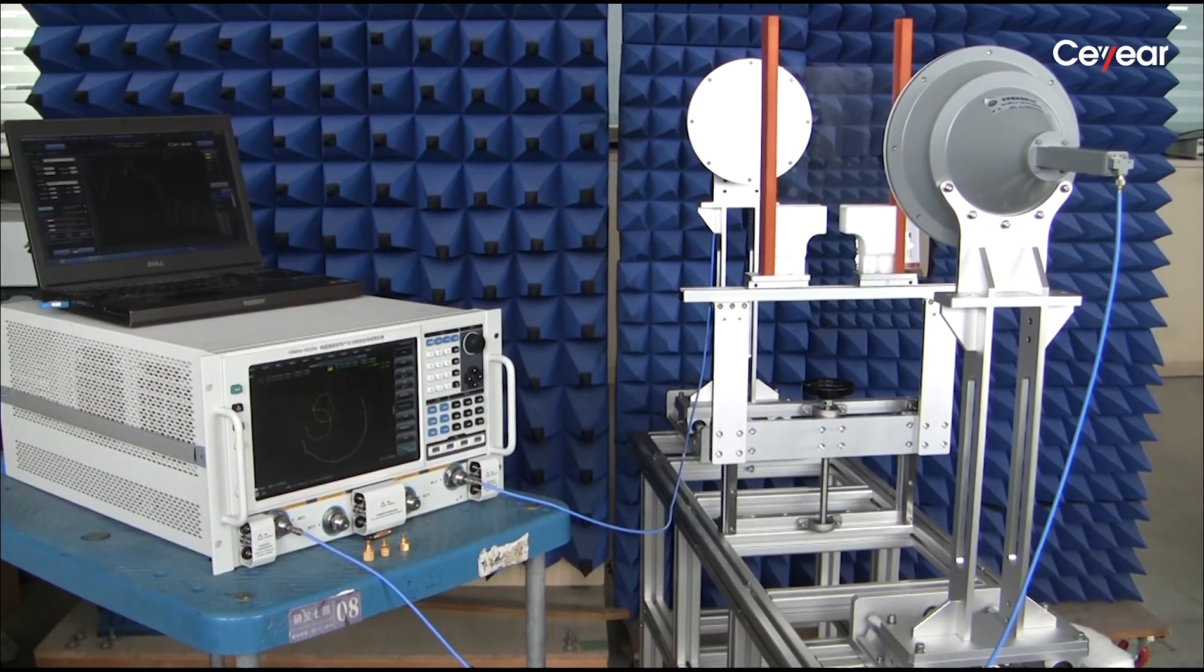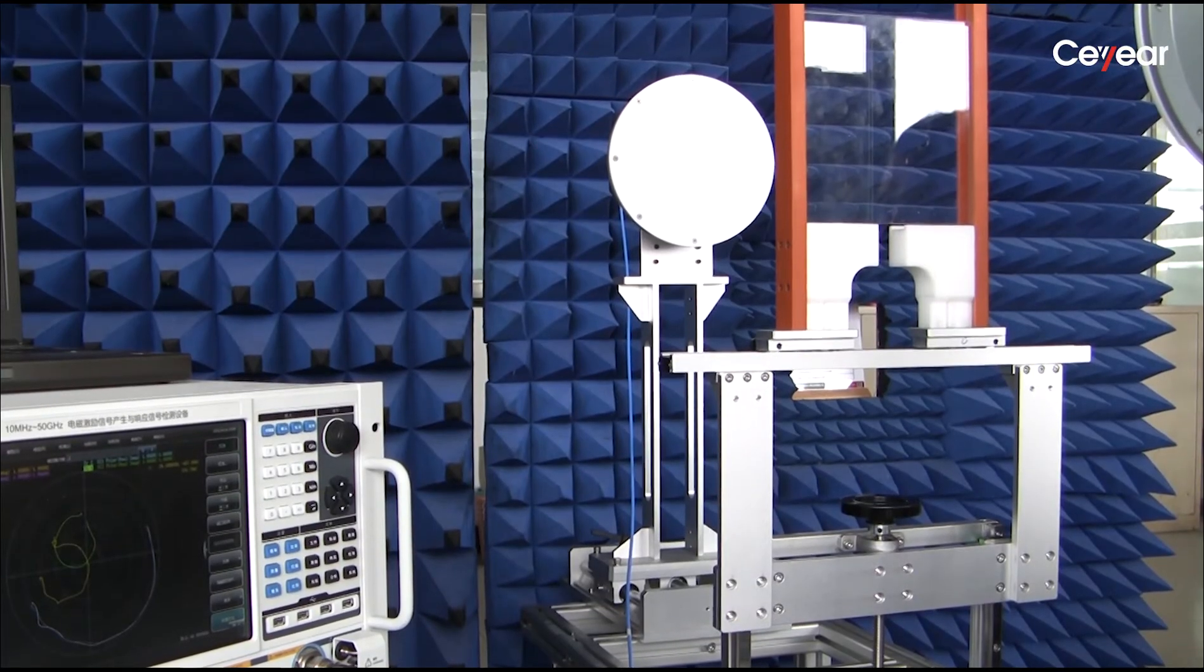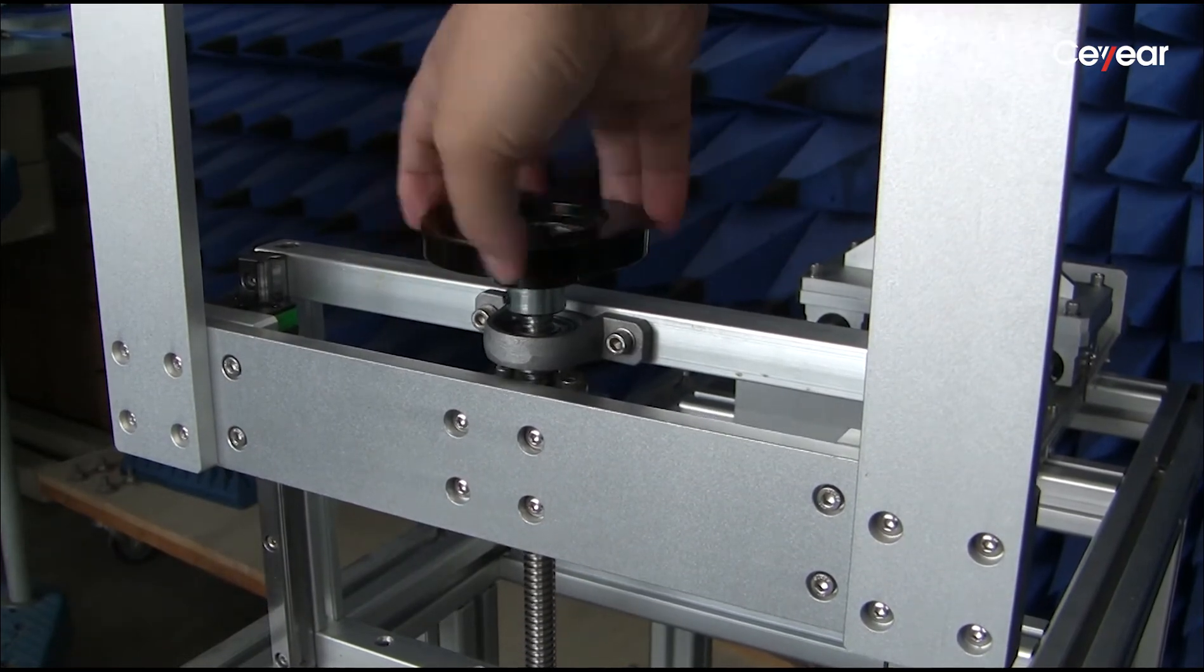The fixture can hold the two antennas at both ends and the material sheet in the middle. You can adjust the material height using this knob.